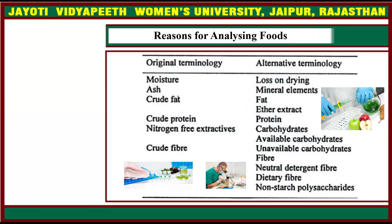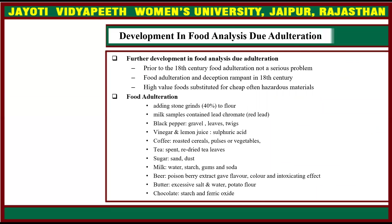Ash represents the mineral components. Crude fat covers fat content and ether extract. Crude protein indicates the amount of protein present in the food. Nitrogen-free extractives are the carbohydrates — available and unavailable. Crude fiber includes neutral detergent fiber, dietary fiber, and non-starch polysaccharides.